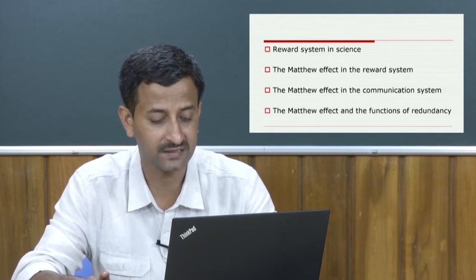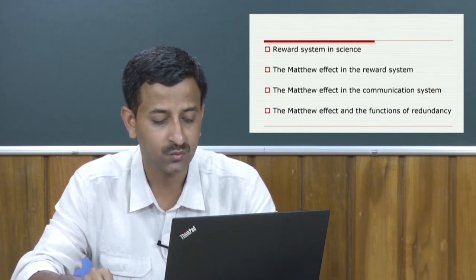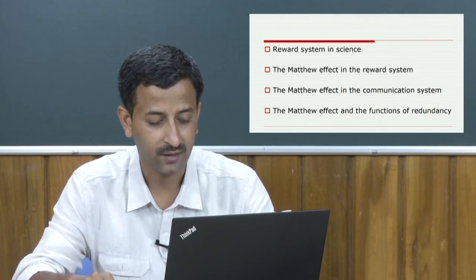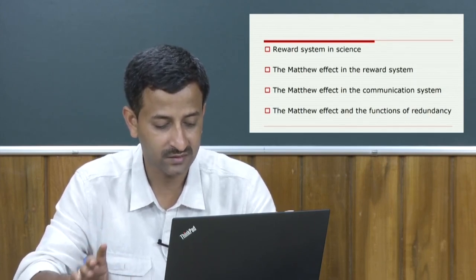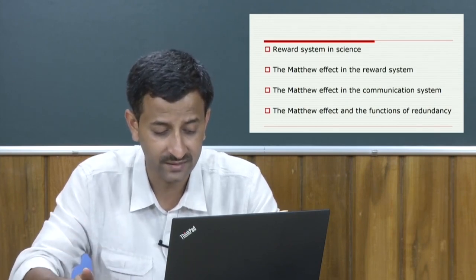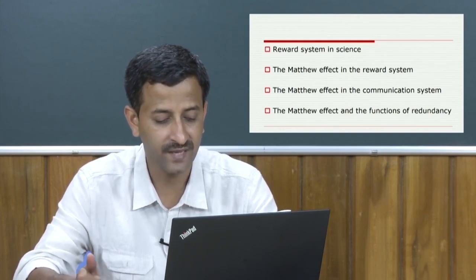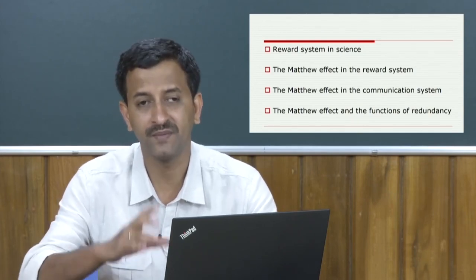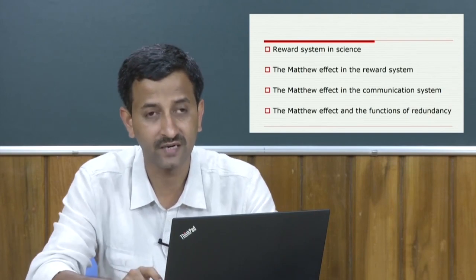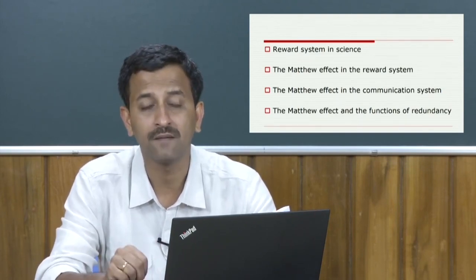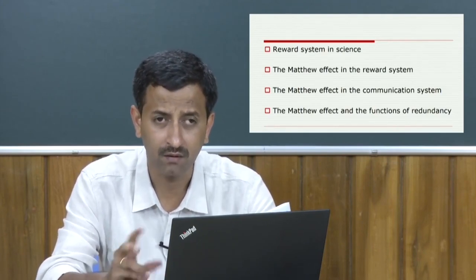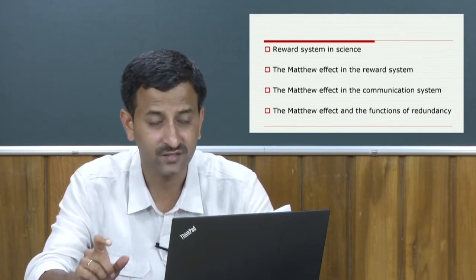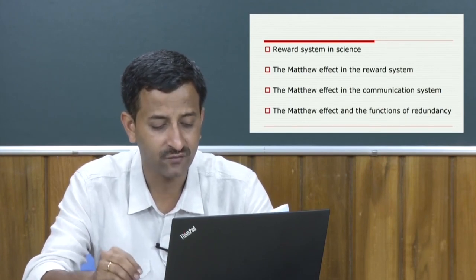This complex pattern of the misallocation of credit for scientific work must quite evidently be described as the Matthew effect. For, as will be remembered, the Gospel according to Saint Matthew puts it this way: For unto every one that hath shall be given, and he shall have abundance, but from him that hath not shall be taken away even that which he hath. It has a biblical origin, as we have already discussed, the Gospel of Matthew. The term the Matthew effect, put in less stately language, the Matthew effect consists in the accruing of greater increments of recognition for particular scientific contributions to scientists of considerable repute and the withholding of such recognition from scientists who have not yet made their mark.